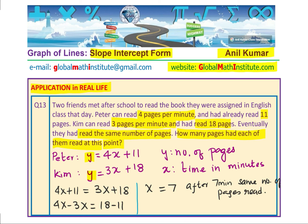The question asks how many pages were read. We substitute x equals 7 into equation 1: y equals 4 times 7 plus 11, which is 28 plus 11, or 39. So 39 is the same number of pages read by both of them at that point. Our answer is 39 pages.